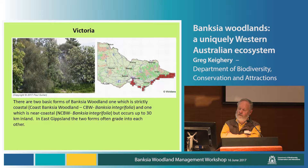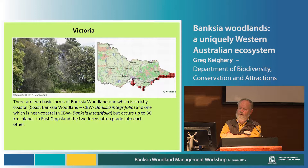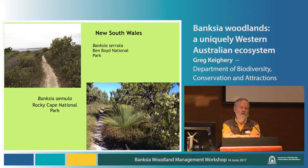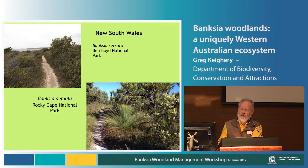There is reasonable Banksia woodland in Victoria, as a result of Paul Gullen's work in mapping the whole state floristically. They've got two major community types: the coastal Banksia woodland and the near-coastal Banksia woodland, both forms of Banksia integrifolia, but with a very species-poor understorey. In New South Wales, it's almost impossible to find a Banksia woodland, and the mapping has not been floristically based — it's been structurally based, so Banksia woodlands are obscured into the heath category. We can pretty well say that Banksia woodlands are largely confined to Western Australia.